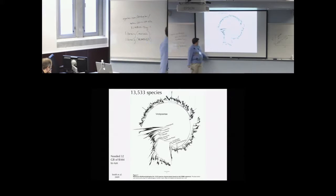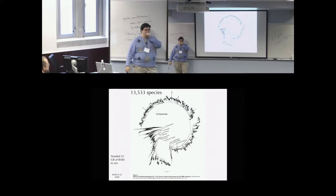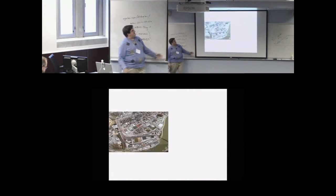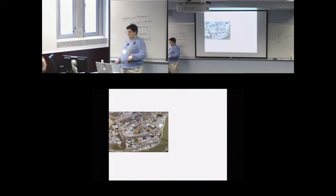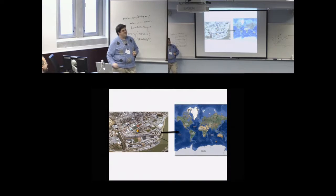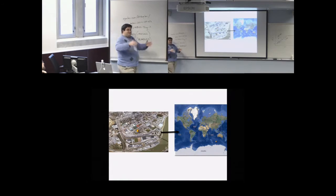Here's a sample tree from about five years ago: 13,000 species, which took 32 gigs of RAM — now you can get that on your desktop. Imagine the search space for 13,533 species is the size of a campus. Finding the right tree is like finding a rubber duck somewhere on campus. If I add just two species, the search space becomes the size of the entire planet. The ratio of campus area to planet area is the ratio of search space for 13,533 versus 13,535 taxa. It's a very big, scary problem.